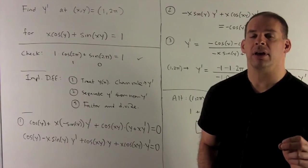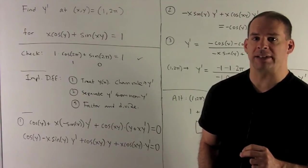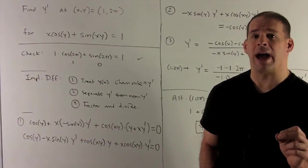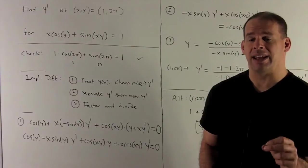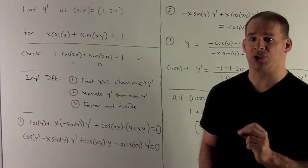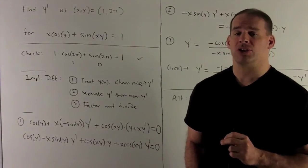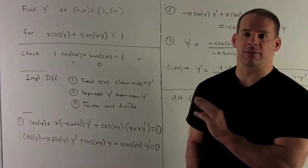So with the product rule, what are we going to have? First, we're going to take derivative of x with respect to x, which is 1. So that's all that's left over, cos(y). Then I'm going to add x times the derivative of cos(y). Do the derivative of cos(y). I'm going to use the chain rule. So we're going to cover up the y. What's the derivative of cosine?